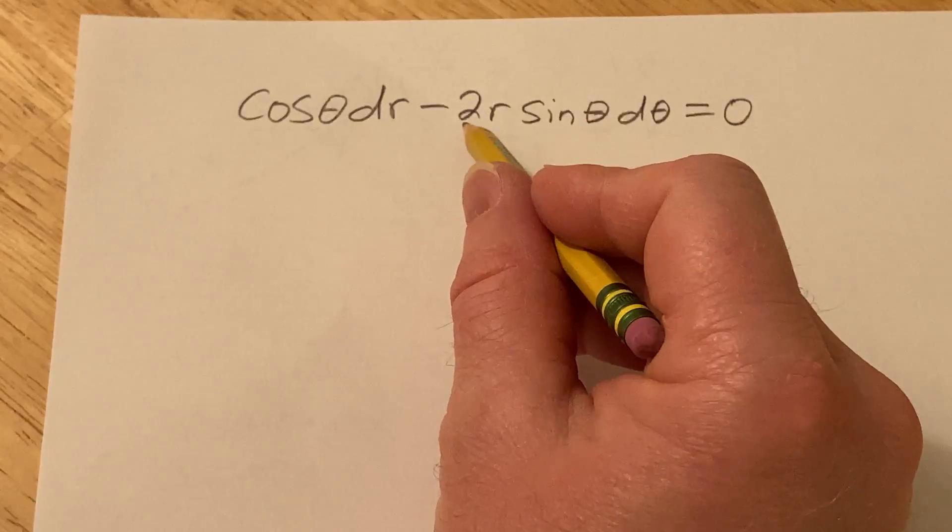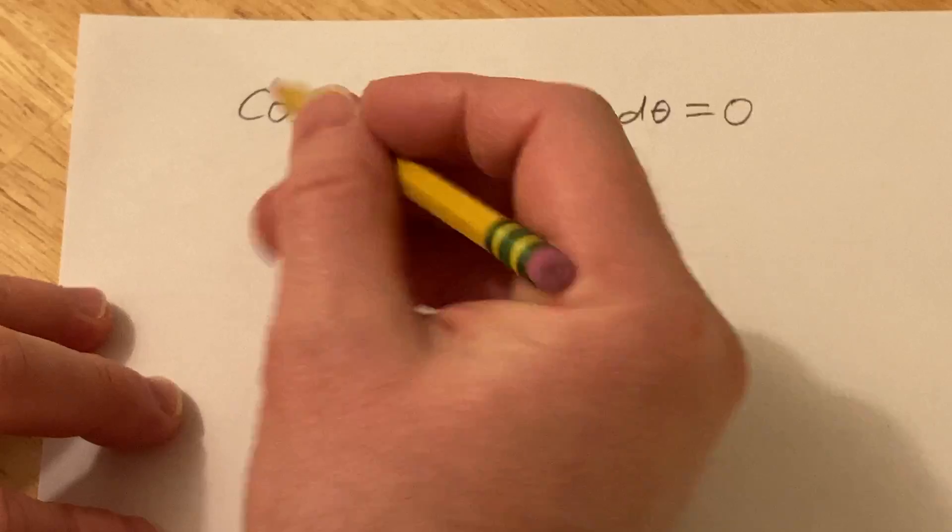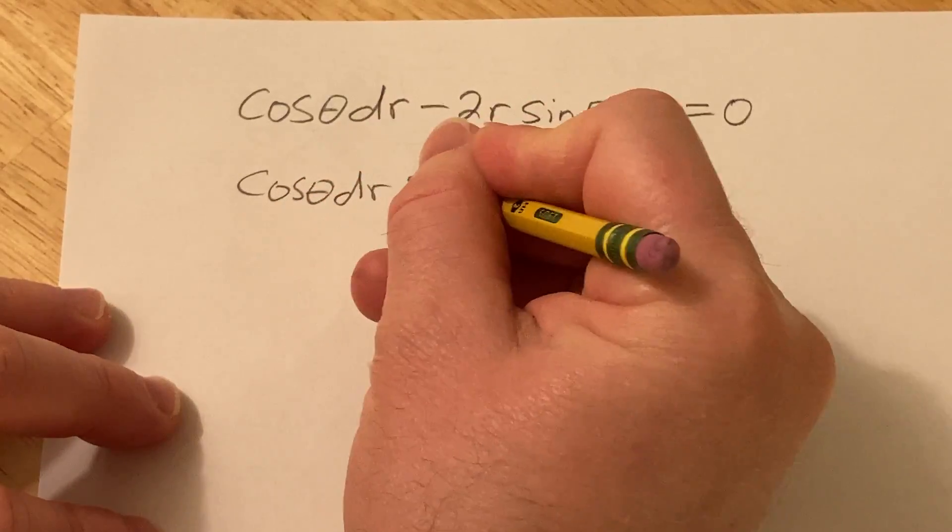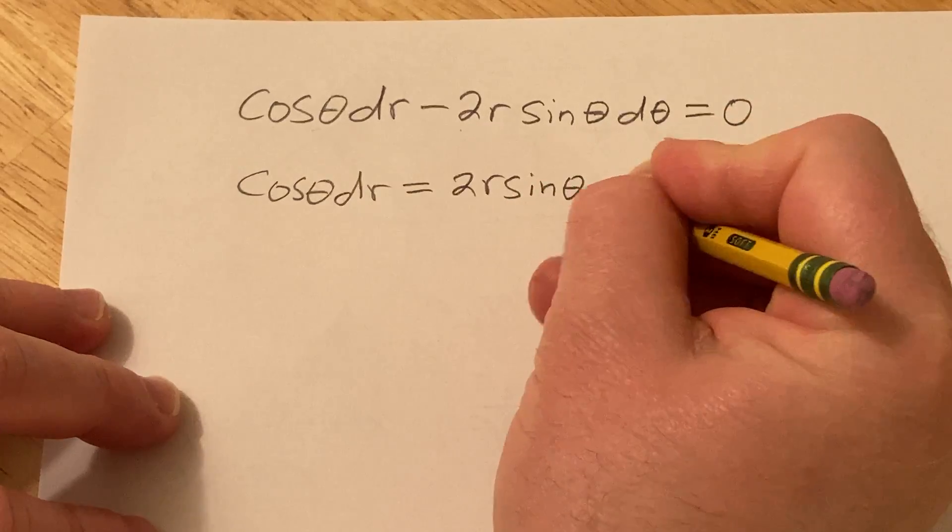I like to get them all on one side. We'll start by adding this to the other side, so we have cosine theta dr equals 2r sine theta d theta.